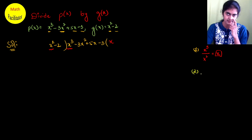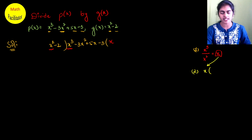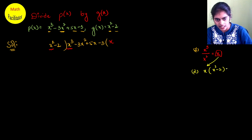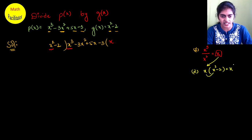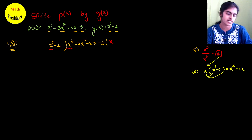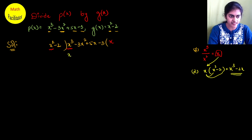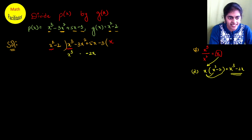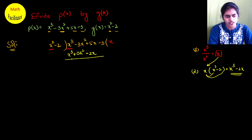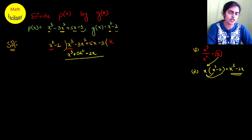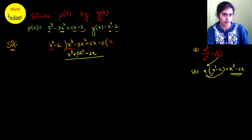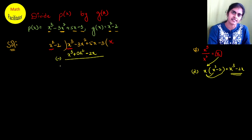Step two: take the quotient term you just got and multiply it by the entire divisor. The divisor is x² - 2, so multiply: x into x² gives x³, and x into -2 gives -2x. Write this result below the dividend. The x³ term goes under the x³ column, there is no x² term so that position is 0, and -2x goes in the x column.